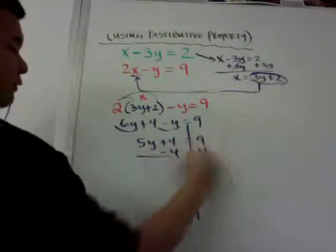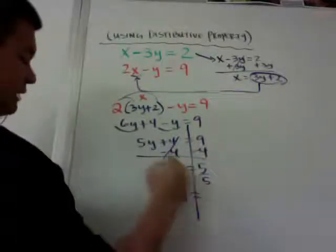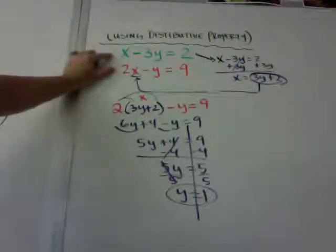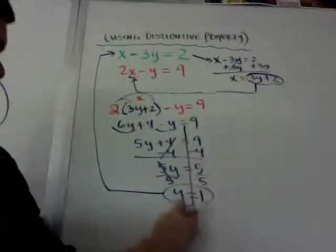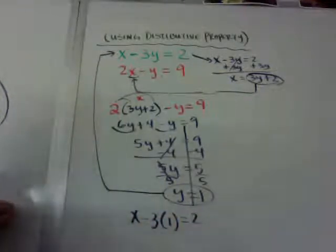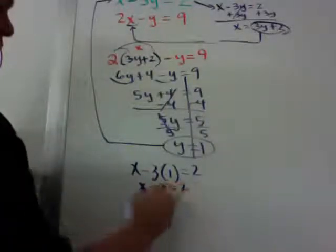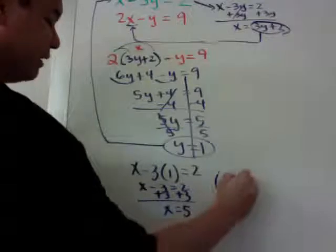I'm going to minus 4 from both sides and get 5y is equal to 5. Divide both sides by 5 and y is equal to 1. Now I'll substitute y equals 1 back into the first equation: x minus 3 times 1 is equal to 2, so x minus 3 is equal to 2. When I add 3, I get x is equal to 5. So my answer is going to be 5 comma 1.